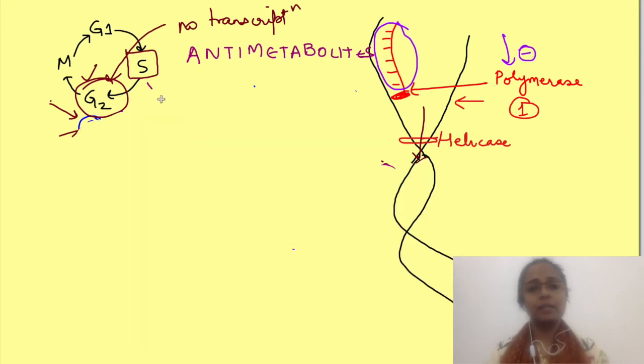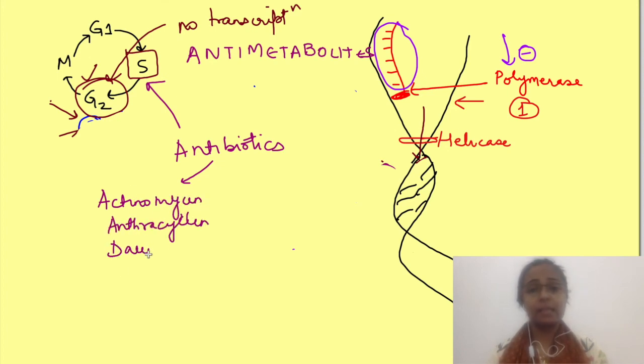Then another class of drugs which act in this phase are antibiotics. All the drugs in this class intercalate between DNA strands and interfere with replication. Exact mechanism differs from antibiotic to antibiotic which we are not going in detail, and many of the actions are not even known. Some examples of the drugs in this class are actinomycin D, anthracycline, daunorubicin, doxorubicin, bleomycin.